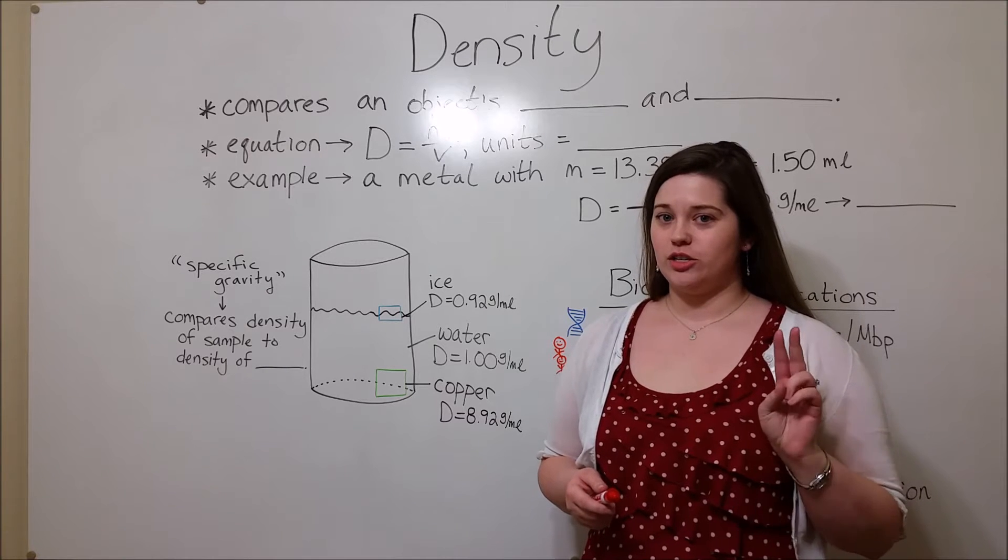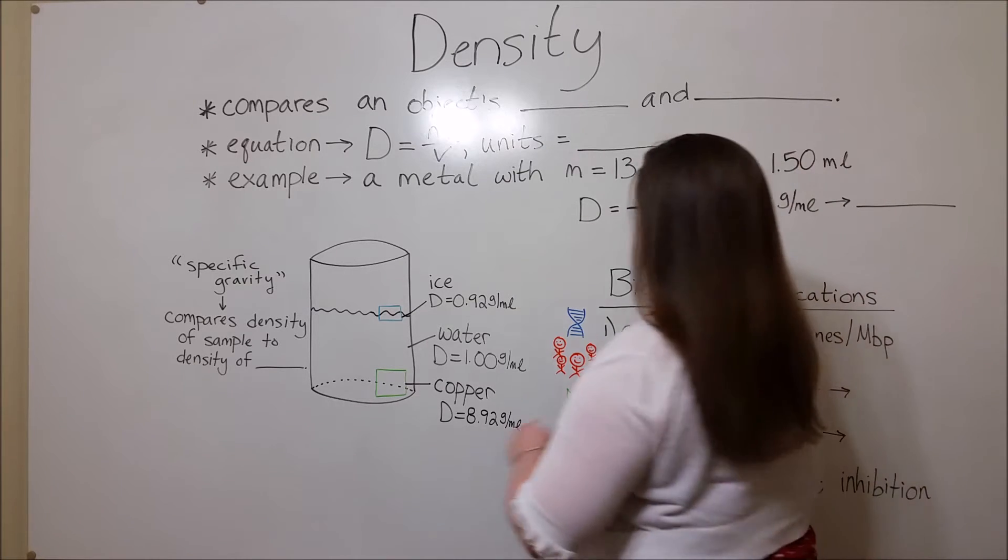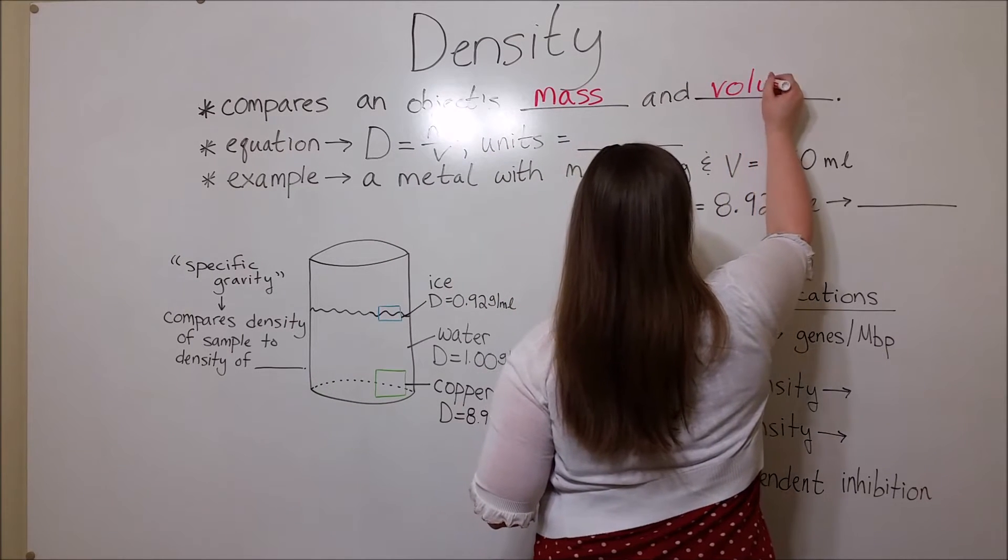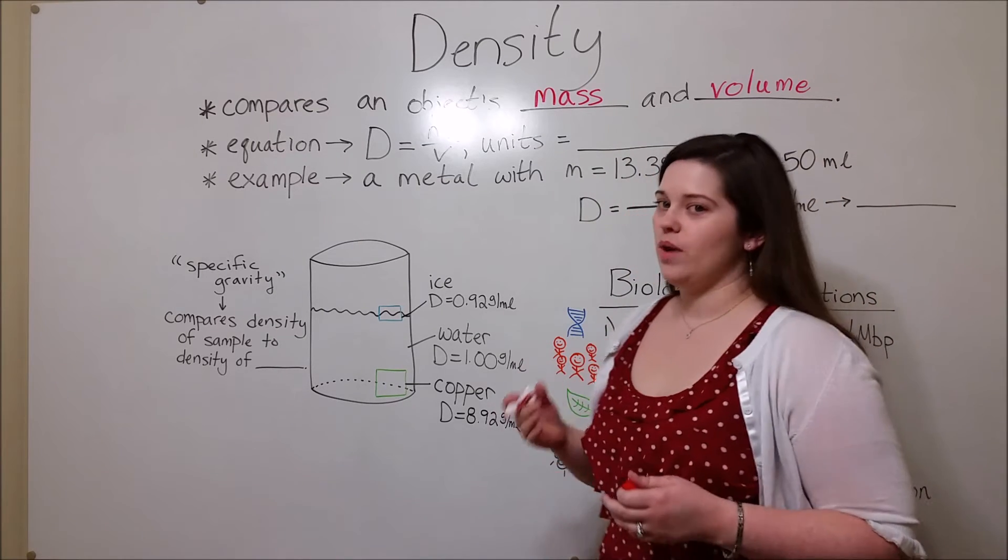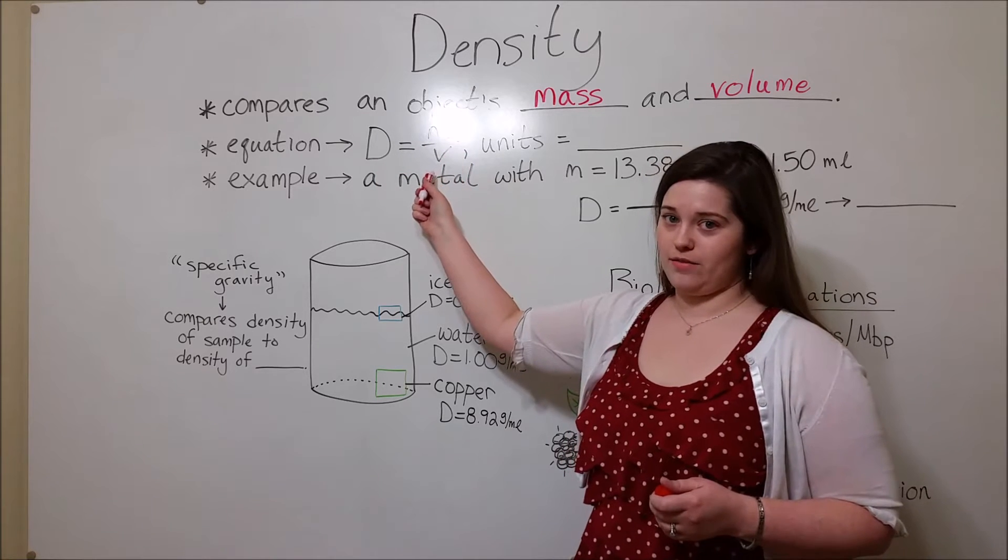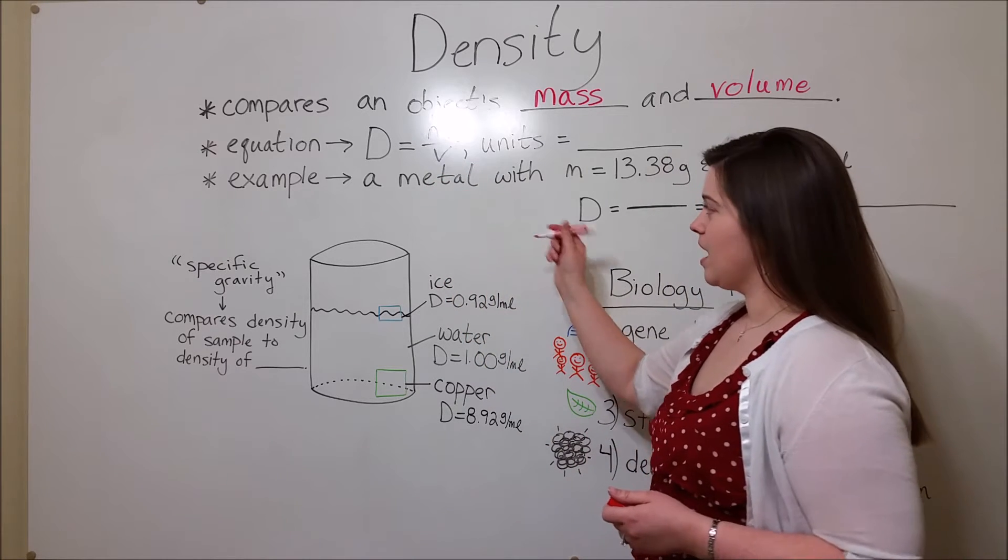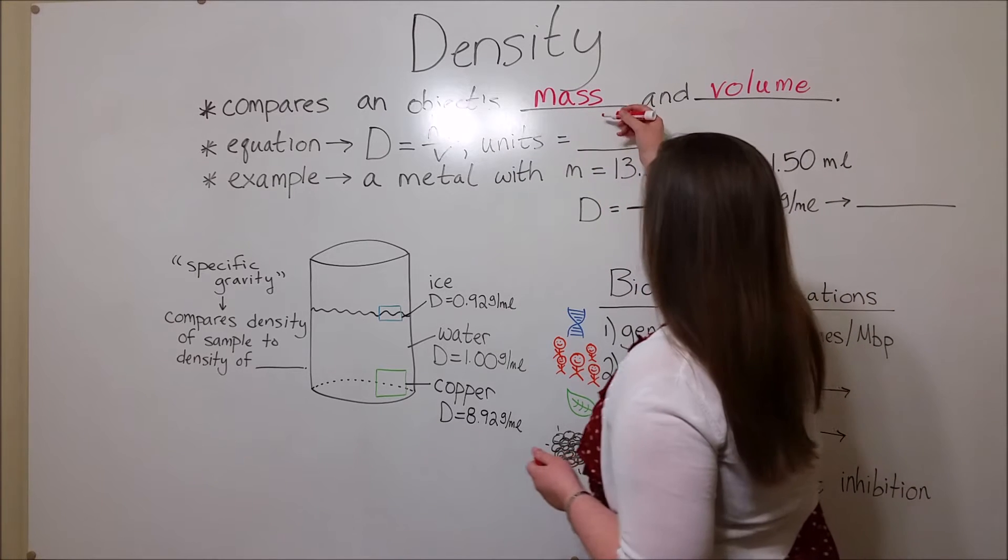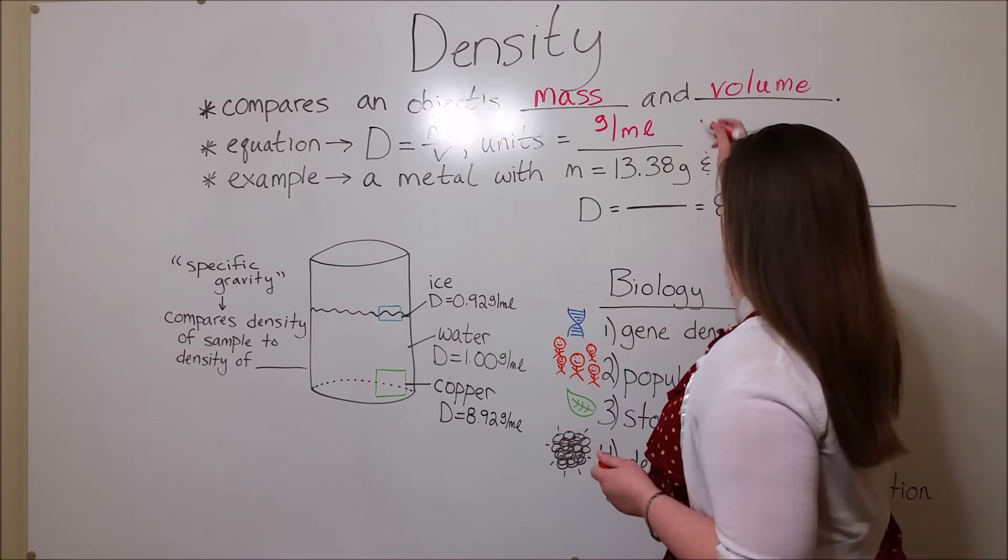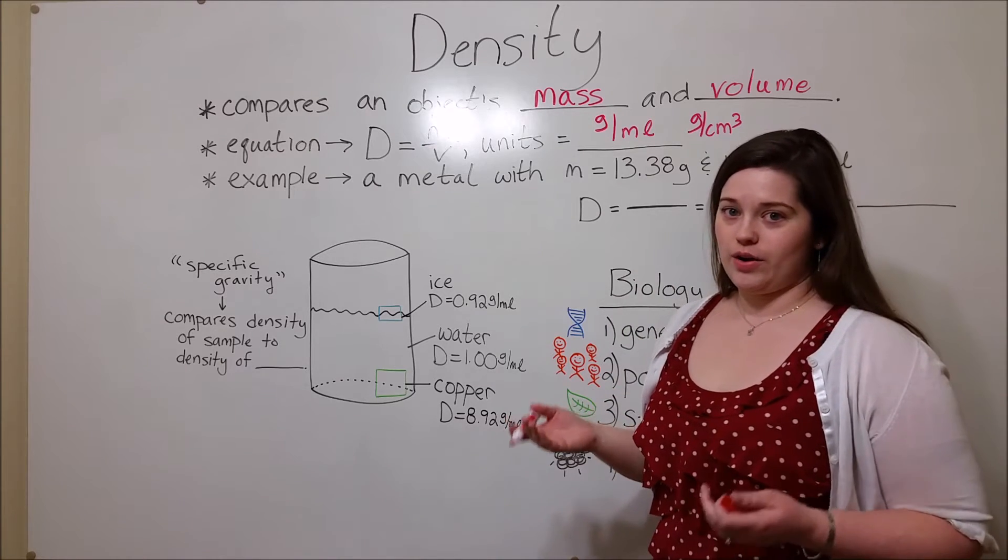Density compares two things: it compares the mass and the volume of an object. The equation used to calculate density is density equals the mass divided by the volume. Essentially, it's a measure of the amount of mass per unit of volume, and the units of density are grams per milliliter. You may also see grams per cubic centimeter, because a cubic centimeter and a milliliter are the same thing.